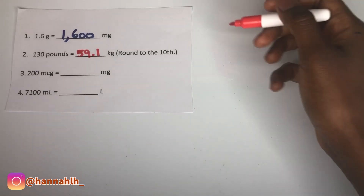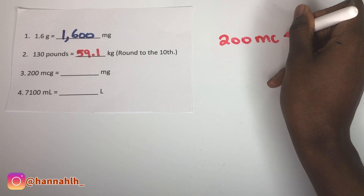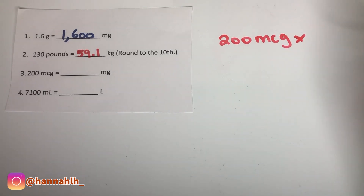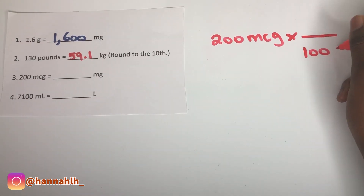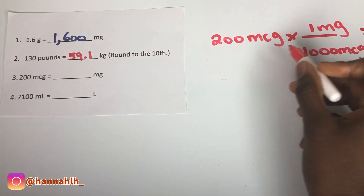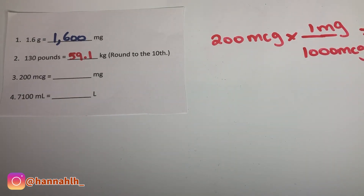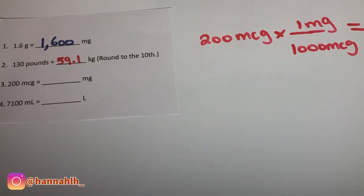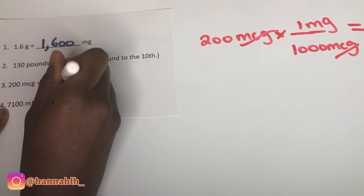Number three, you have to convert 200 micrograms to milligrams. 1000 micrograms is actually equal to one milligram. All you have to do is multiply across and then divide: 200 times 1 divided by 1000. The answer should be 0.2 milligrams.